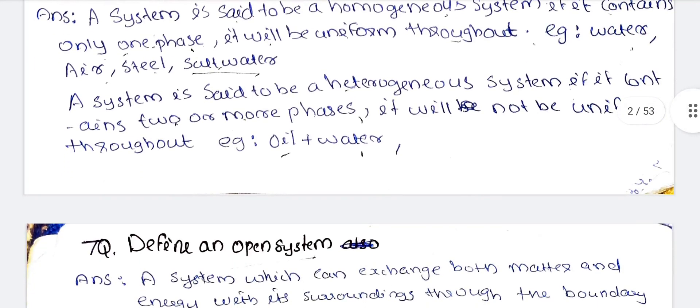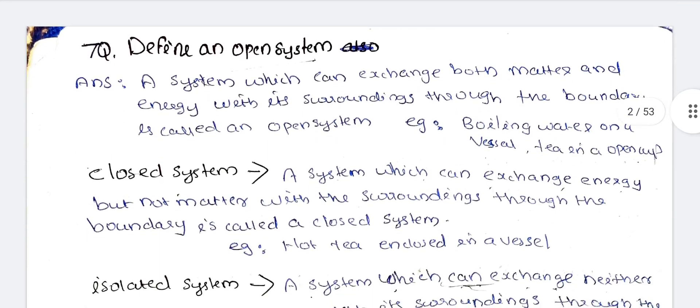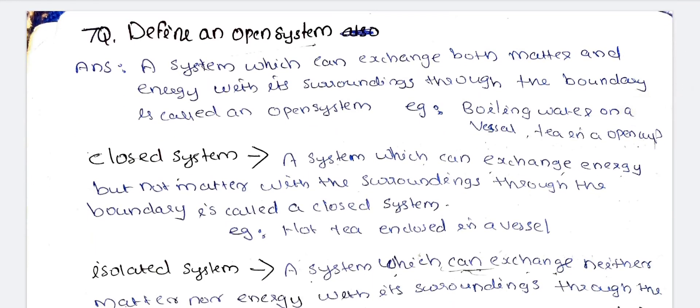A system is said to be heterogeneous if it contains two or more phases — it will not be uniform throughout. For example, oil and water will separate into two phases. Next, we will discuss open, closed, and isolated systems. This is an important section for short answer type questions.